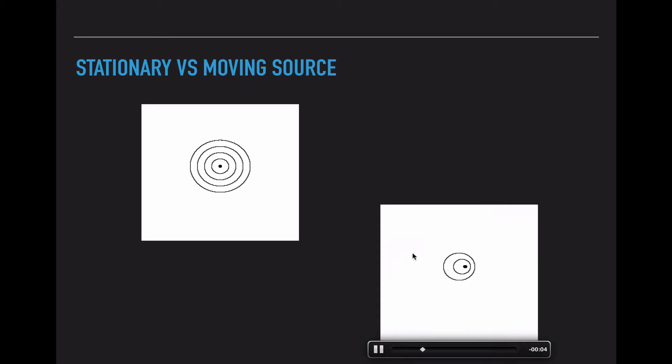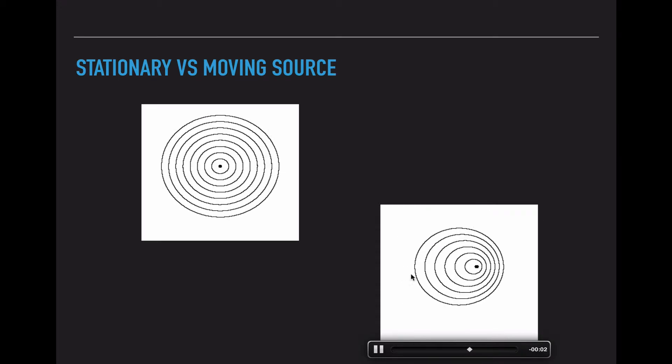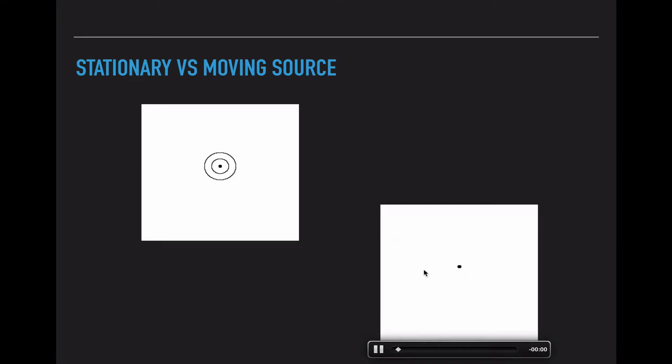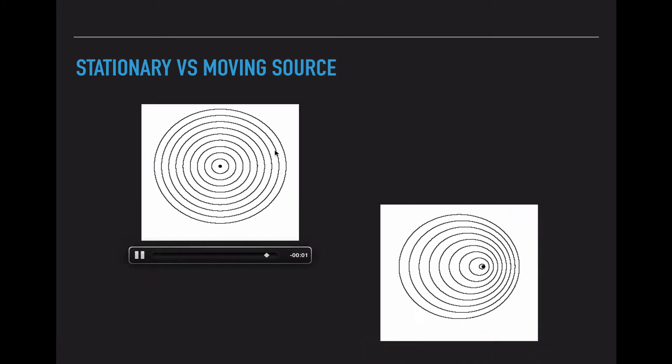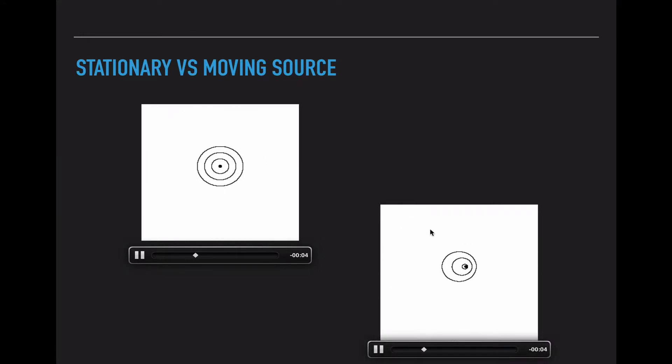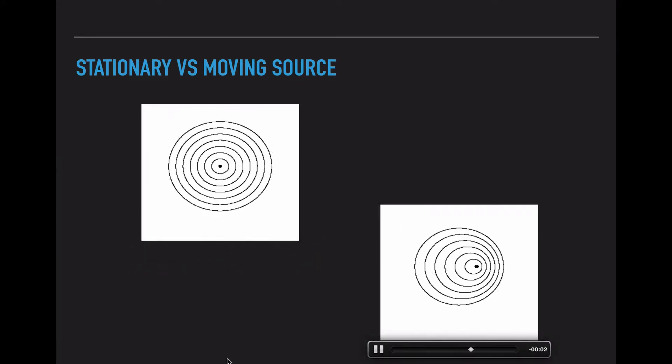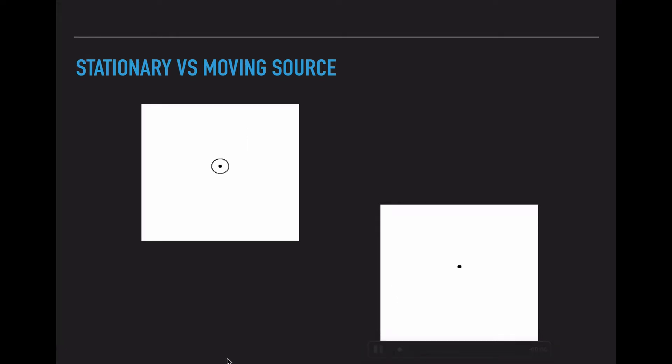Back here, the wavelengths are stretched out. Since the source is moving away from this direction, there is more distance in between the corresponding crests. So these two diagrams show stationary source, moving source. And they're really important because this does affect the way that we hear this noise.